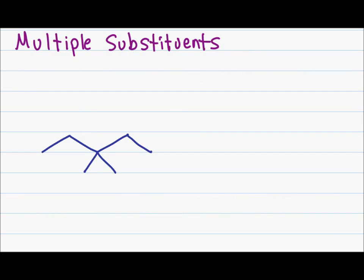What if I have more than one substituent on my chain? I can have multiple substituents on the same carbon or substituents located on different carbons, and I treat them the same way. First I identify if I have multiple of the same or different types of substituents. Let's start with multiple of the same type — in this case I have two methyl groups on my carbon chain. I will use prefixes to identify how many I have.